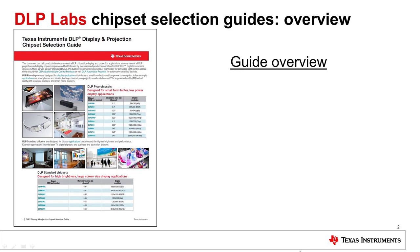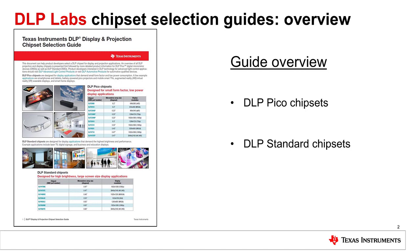It contains two sections: DLP Pico chipsets, which are designed for small form factor, low power display applications, and DLP Standard chipsets, designed for high brightness, large screen size display applications. Product developers interested in DLP technology for advanced light control or automotive applications should visit ti.com/DLP for more information.